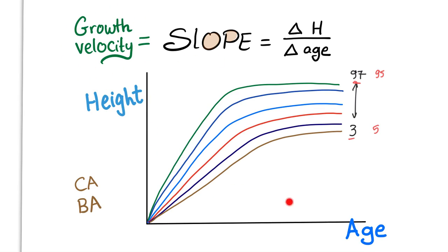First, let's understand growth velocity. Growth velocity is the slope of the curve — and from mathematics, slope is the change on the y-axis over the change on the x-axis: delta height over delta age. This represents growth velocity. It's similar to physics: velocity is change in distance over change in time, and age here represents time.